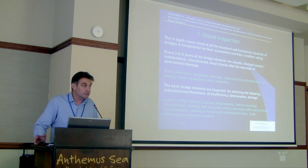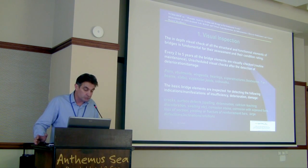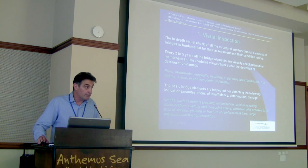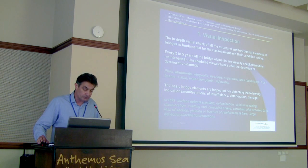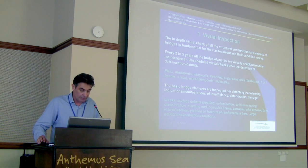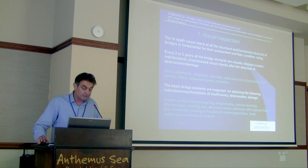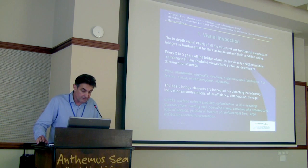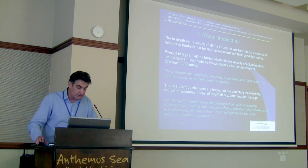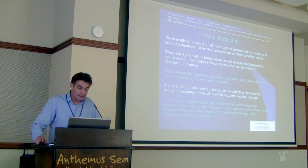Every two to five years, depending on the funds, resources, and personnel, we should monitor and inspect the basic bridge elements — piers, abutments, bearings, and so on. The basic bridge elements are inspected for detecting indications, manifestations, or insufficiency, deterioration, cracks, surface defects, spalling, delamination, calcium leaching, discoloration, swelling, corrosion stains, corrosion with exposed bars, and so on.